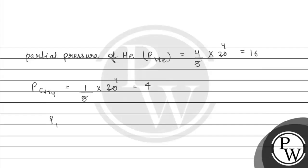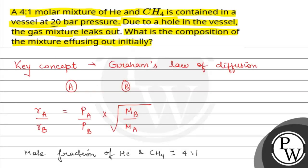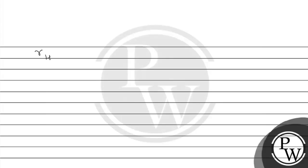The ratio of partial pressure of helium to methane is 16:4. Now we apply Graham's Law of Diffusion. The rate of diffusion of helium to the rate of diffusion of methane equals the partial pressure of helium to partial pressure of methane, multiplied by the square root of molecular mass of methane upon molecular mass of helium.